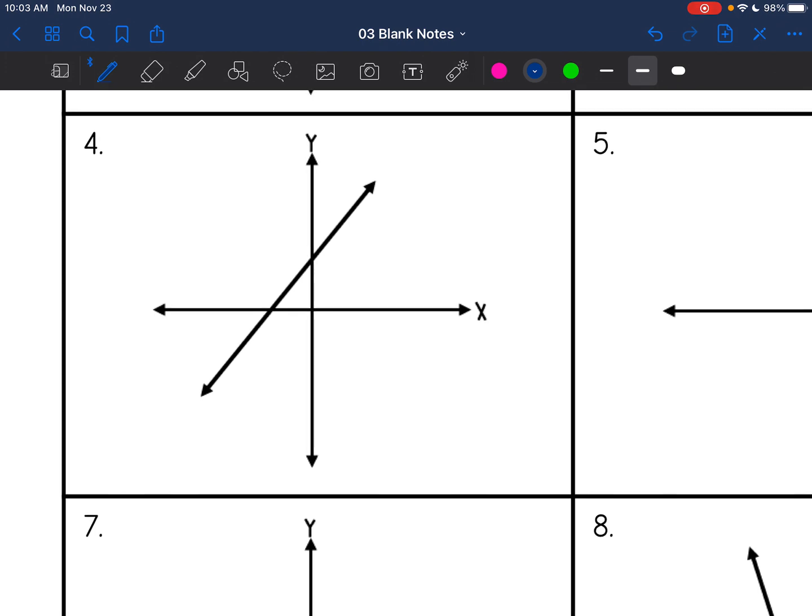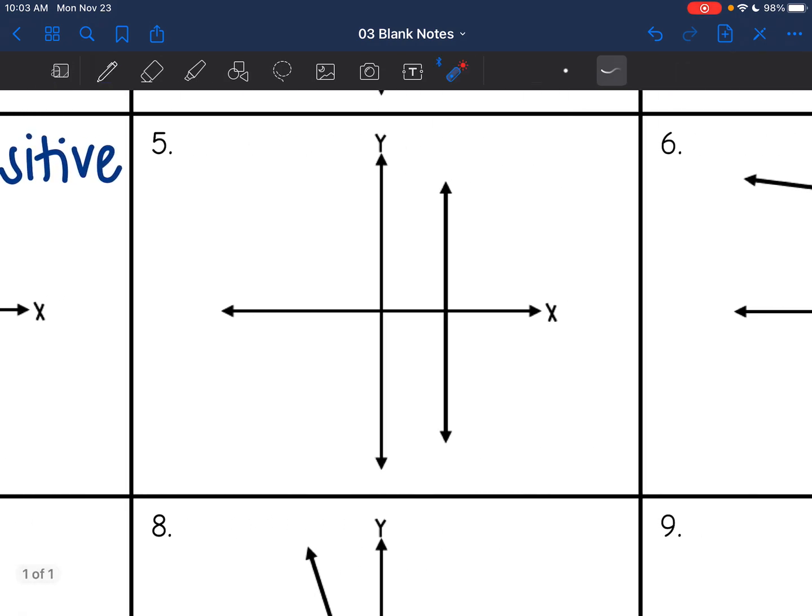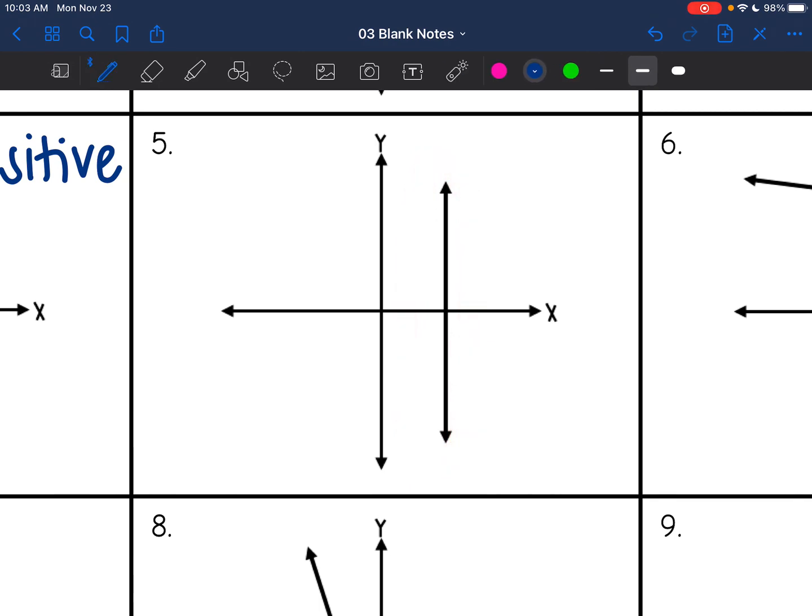Okay, next one it is not going up as drastically, but it still is going up. So this is another positive slope. Number five, I have that completely up and down line. So this is our undefined slope.